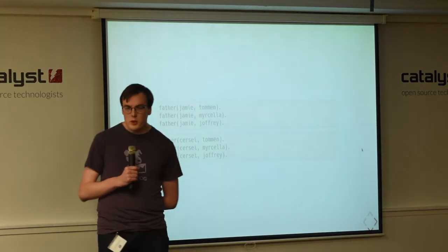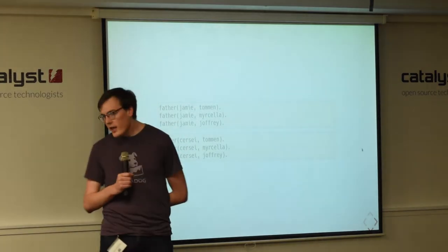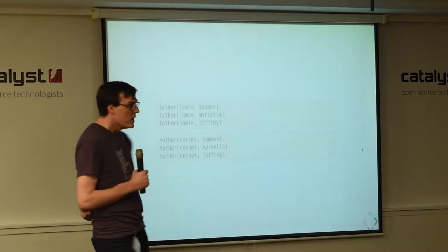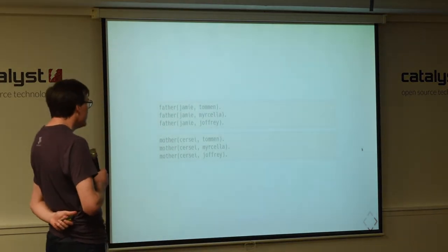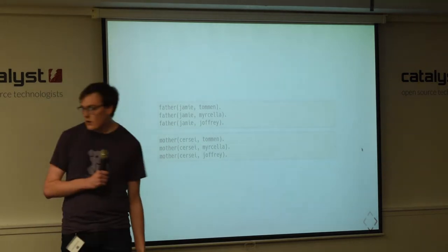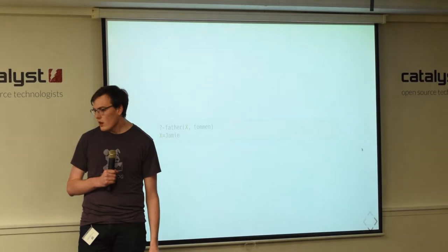Where we relate parents, mothers and fathers, to their children. So, there's two characters in the show, Jamie and Cersei. And they have three children between them. Tommen, Mozilla, and Joffrey. And so, we can represent these relationships with these six facts. So, if we query prologue, who is the father of Tommen, then there's one fact that matches this. And that's Jamie.